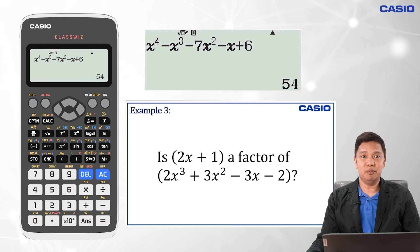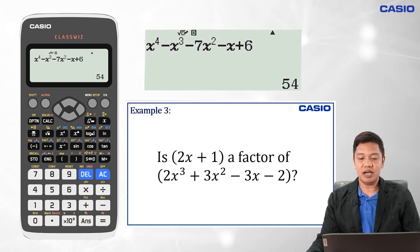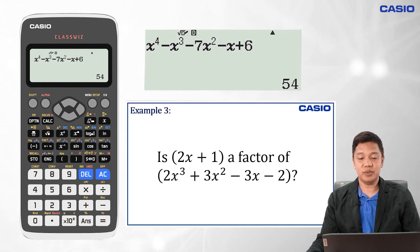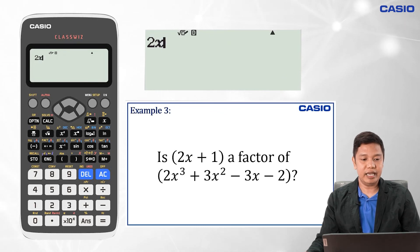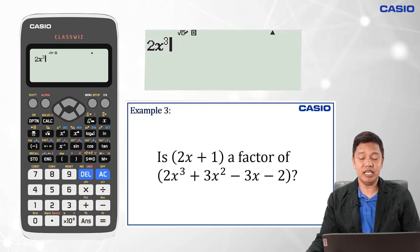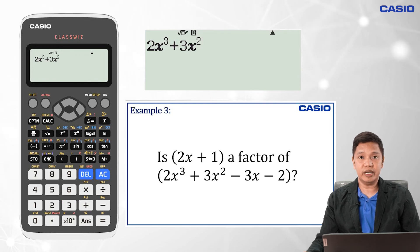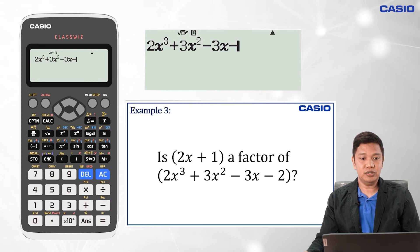For the last example, we are asked to determine whether 2x plus 1 is a factor of the polynomial 2x cubed plus 3x squared minus 3x minus 2. In our ClassWiz, we input the polynomial: 2x cubed, then plus 3, then x, then squared for exponent 2, minus 3x, minus 2.